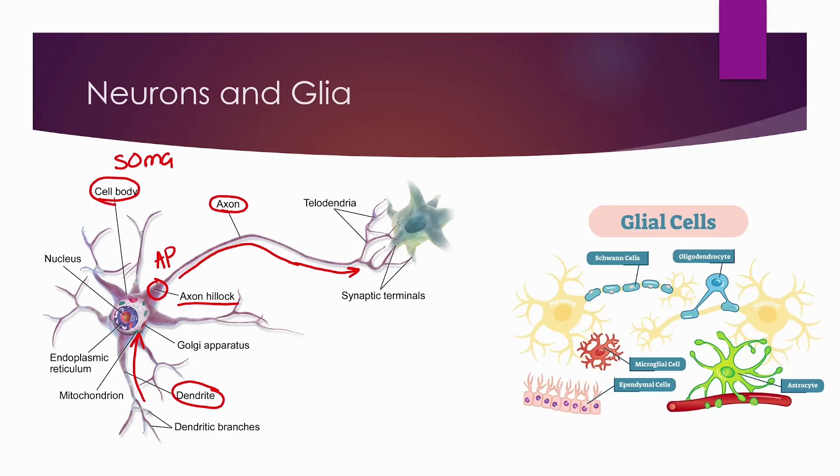Astrocytes nourish neurons and they form the blood-brain barrier. The blood-brain barrier controls the transmission of solutes and cells from the bloodstream into nervous tissue. Ependymal cells line the ventricles of the brain and they produce cerebrospinal fluid, or CSF.